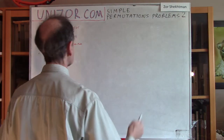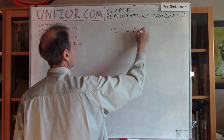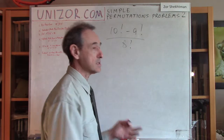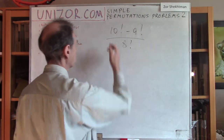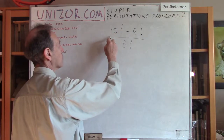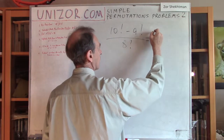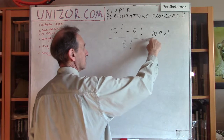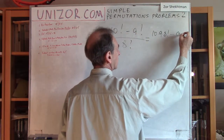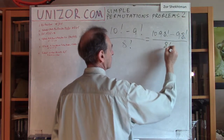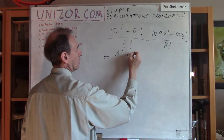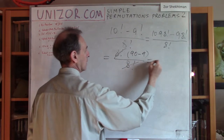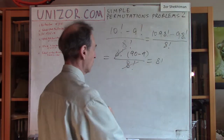Next, a calculation problem: ten factorial minus nine factorial, divided by eight factorial. Factorial is the product of all numbers from one up to the given number. I can write ten factorial as ten times nine times eight factorial, and nine factorial as nine times eight factorial. So the expression becomes eight factorial times (ten times nine minus nine), all divided by eight factorial. That simplifies to ninety minus nine, which equals eighty-one. These problems are very simple — just to make sure you don't forget what factorial actually is.